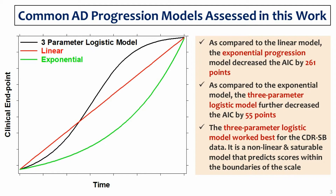Disease progression has commonly been described using linear, exponential, and logistic structural models in the AD literature. In this analysis, we formally compared those structural models. The three-parameter logistic model describes an S-shaped disease progression curve and follows a non-linear and saturable trajectory that stays within the boundaries of the scale.